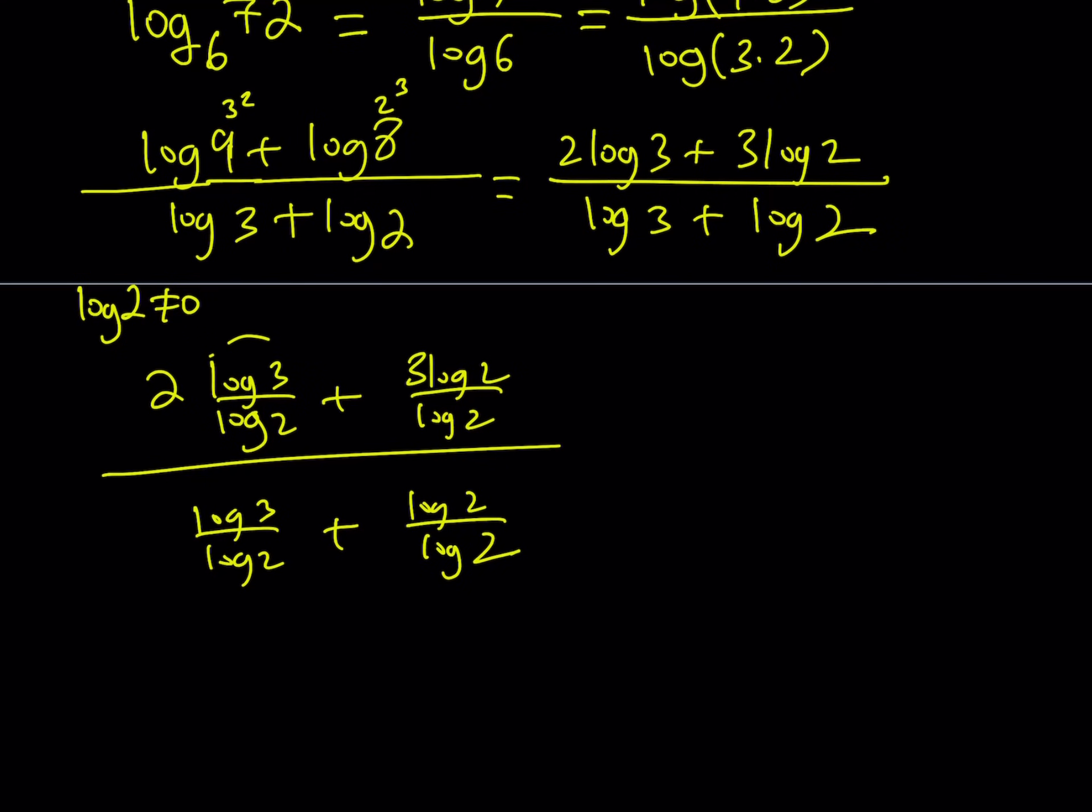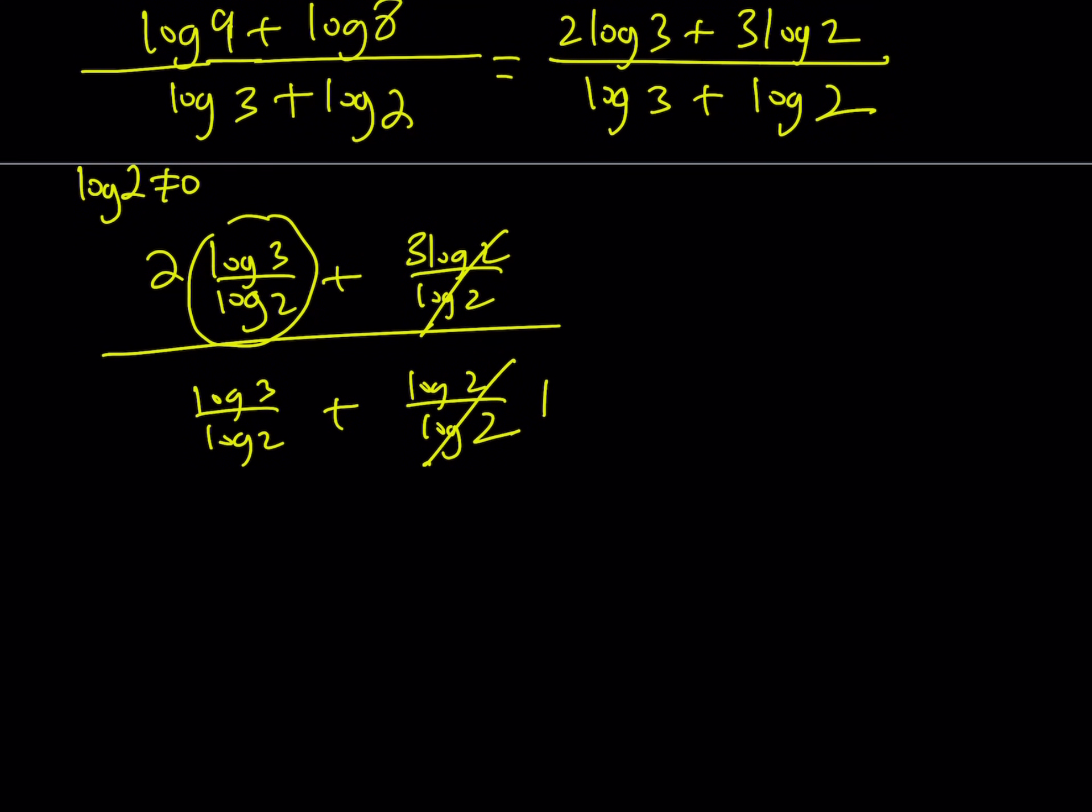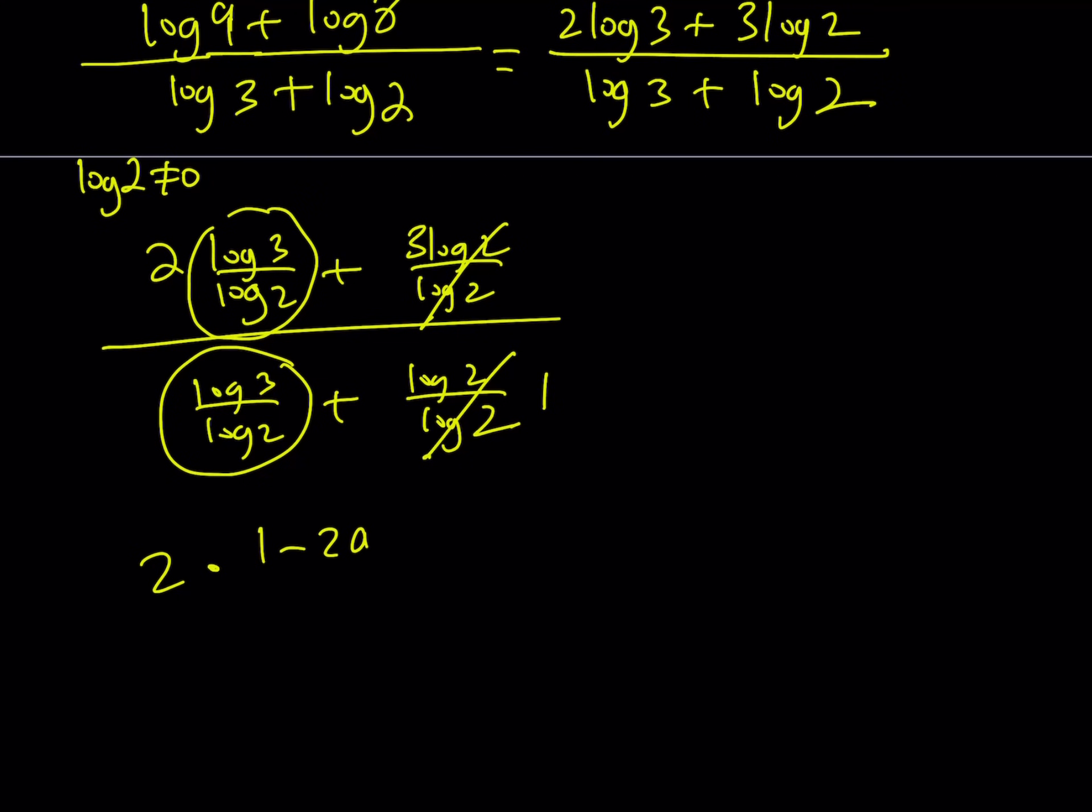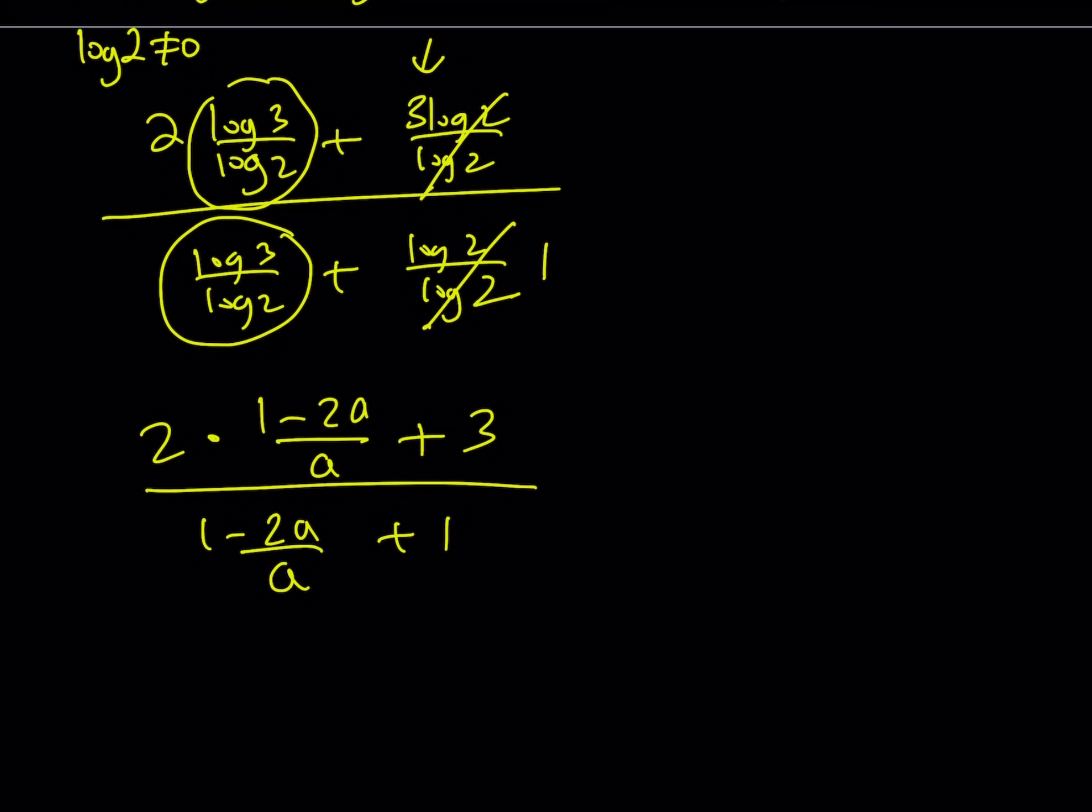Now, notice that this is my expression, the ratio. This is 1 and this is 1. Of course, just make sure to write a 1 there. It's not 0. And this is my expression. So from here, the original expression that I have can be written as 2 times. Now, what is the ratio log 3 over log 2? That is 1 minus 2A over A, right? Plus 3. This 3 right here. And then that is divided by, this expression again comes up, 1 minus 2A over A, plus 1. So this is what I'm trying to find. Let's go ahead and simplify this.